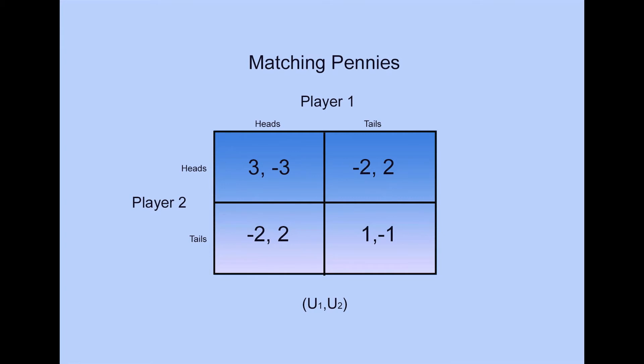Assume that for this particular game, the payoffs are as follows. For the matching heads heads, player 1 gets 3 and player 2 gets negative 3. For matching tails tails, player 1 gets 1 and player 2 gets negative 1.